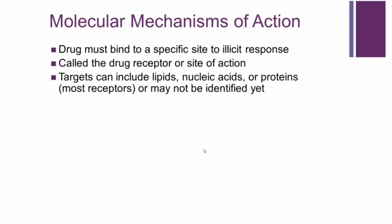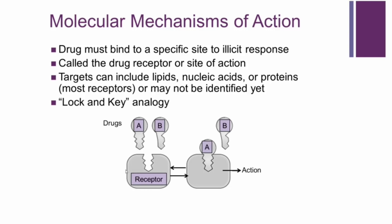In pharmacodynamics, there are different molecular mechanisms of action. Drugs must bind to a specific site to elicit a response — this is called the drug-receptor site interaction. There are many different targets for these receptors: lipids, nucleic acids, or proteins, which are most receptors — many of which have not been fully characterized. It's a lock-and-key analogy: you have a receptor, and you need the drug — either drug A or drug B — to bind to the receptor to achieve a response. The interactions are driven by affinity and can be reversible or irreversible (covalent binding).